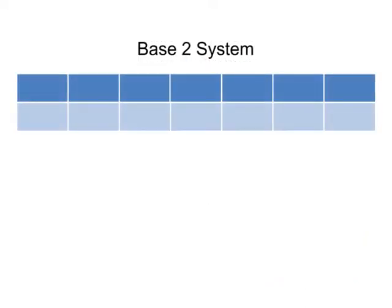Now, let's consider place value in the base 2 system. Starting at the right, we have 2 to the 0 power, then 2 to the 1st power, then 2 to the 2nd power, and so on.